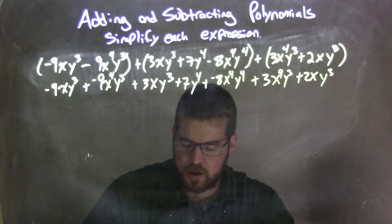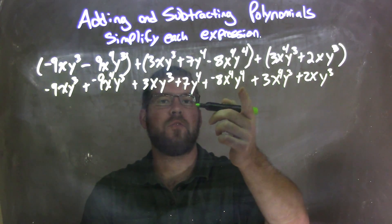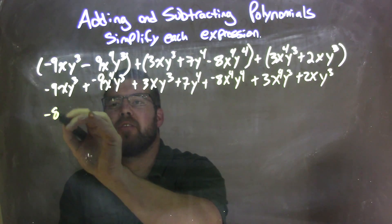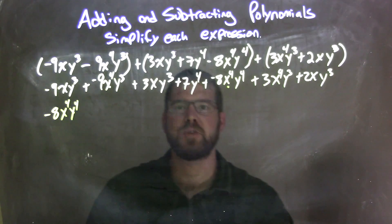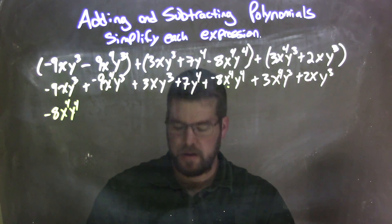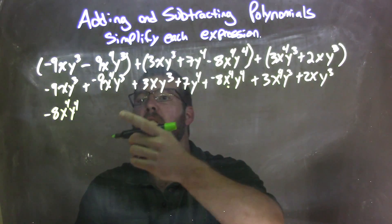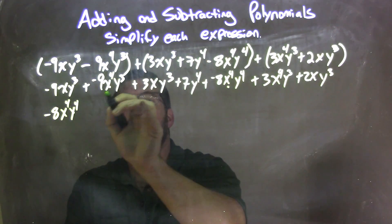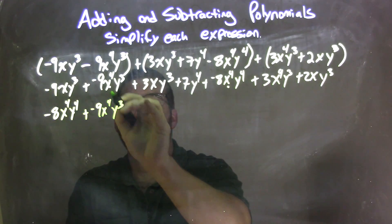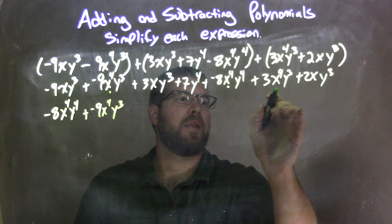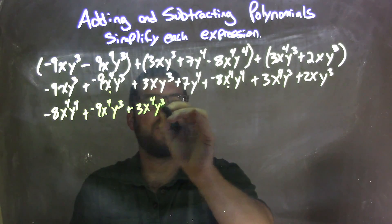So now we're going to put our like terms together. The highest degree I see, we have x to the fourth y to the fourth, and I'm going to put that first. So we have negative 8x to the fourth y to the fourth, and I'm going to put a dot underneath it showing that I brought that down. Then I see we have x to the fourth and y to the third — a few of those — so I'm going to do those next. So we have adding a negative 9x to the fourth y to the third, and the other x to the fourth y to the third, plus 3x to the fourth y to the third.